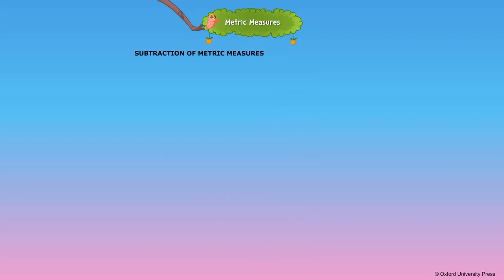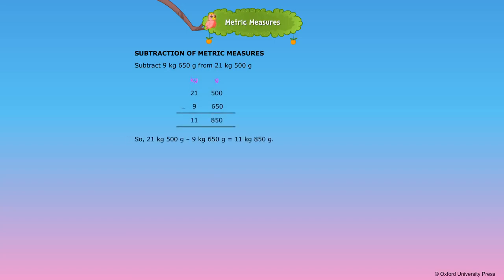Subtraction of Metric Measures. We can subtract using the same two methods used in addition. In the first method, write the measures correctly in columns under the correct units and subtract. In the second method, write the given units of measure in bigger units and subtract as for decimals.